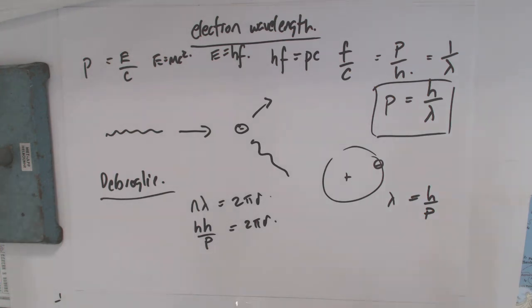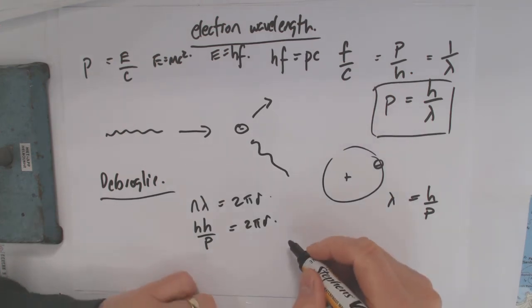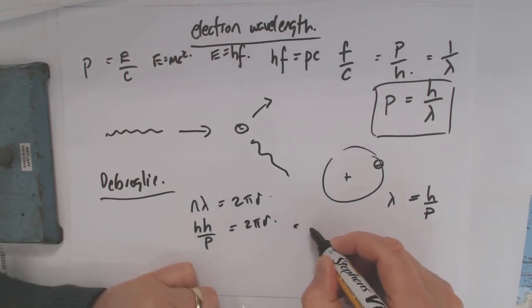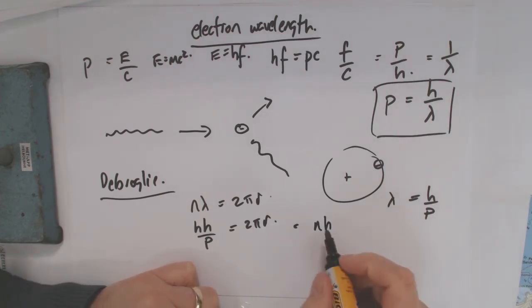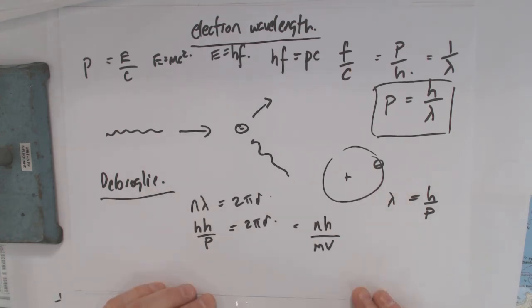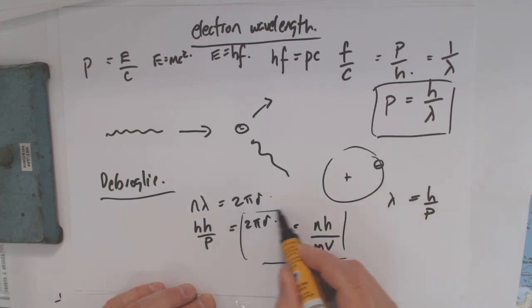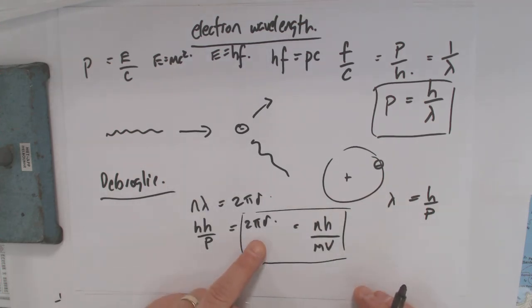Well, we can actually then say that p is equal to mv. So we could say that's equal to n h over mv, right? And if we bring the 2 pi down, what are we saying? And we'll bring the 2 pi down here. So this is all looking good at this stage, right?